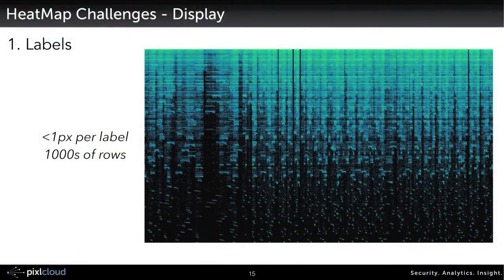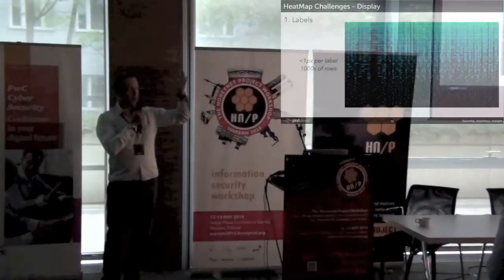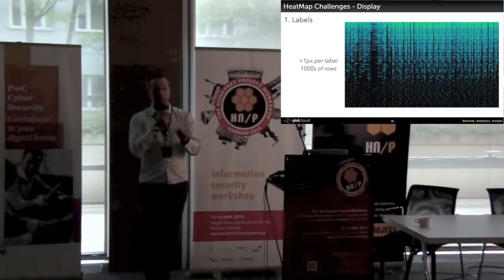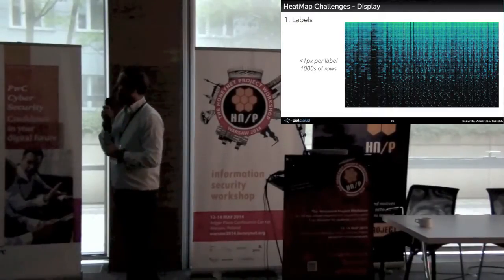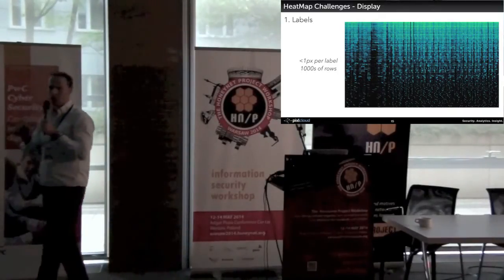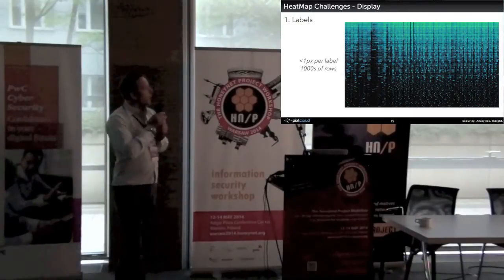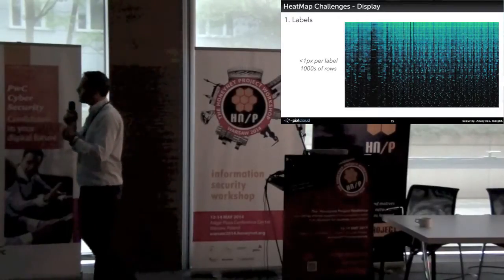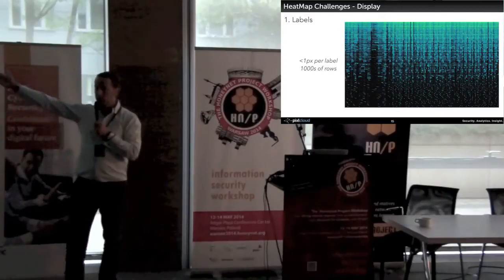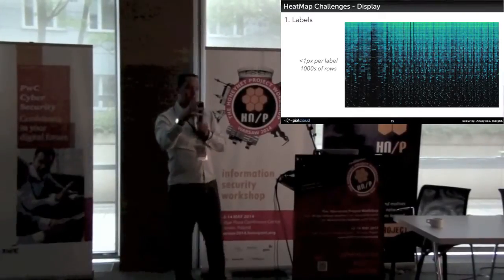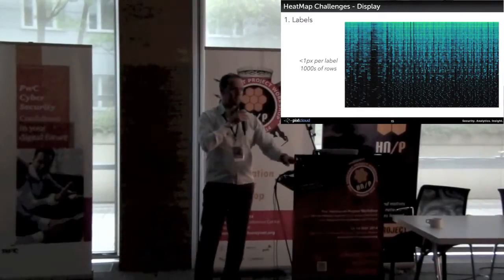I want to show you that even something as simple as a heat map, when you start implementing it, has a whole lot of challenges. The first one: this is an example with a lot of records — I think it's the Syrian proxy logs. If you want labels, if you want to know what the rows actually are, I have over a thousand rows visible here. I can't even draw the labels in there. So at what point do I actually show them? And if I don't show them, is it still useful?